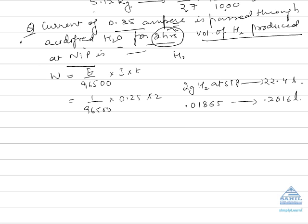When water is electrolyzed, it uses two Faraday of electricity. 2/2 equals 1, so the equivalent mass of hydrogen produced is 1. Using W = E/96500 × I × t, we get W = 1/96500 × 0.25 × 2.